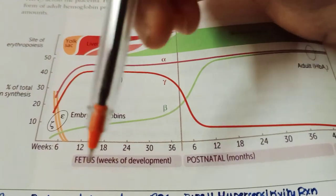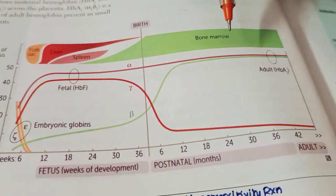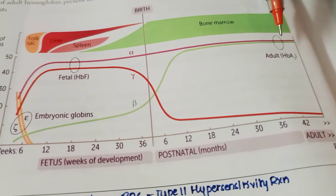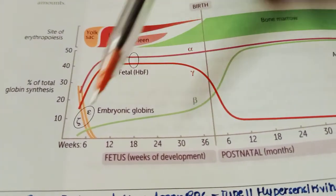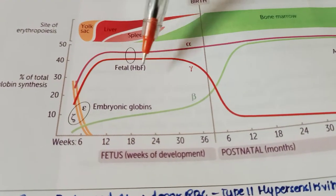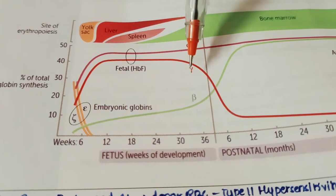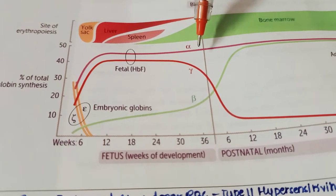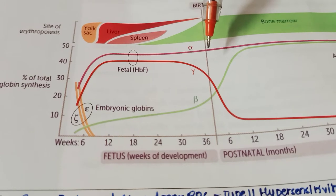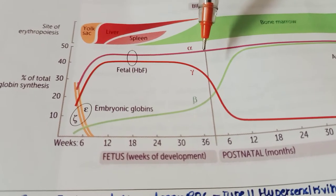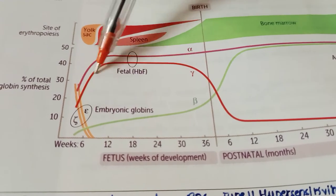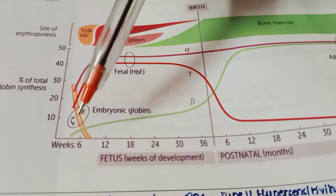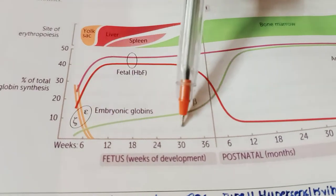This graph shows fetal weeks of development and postnatal months. In adults, HbA2 is maximum; in the fetus, HbF is maximum. HbA2 (alpha and delta) is also present in small amounts in the fetus. In adults, the main hemoglobin is alpha-2 beta-2, which peaks in adulthood.